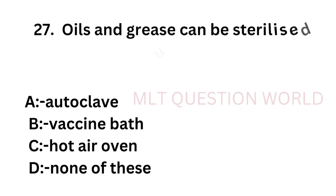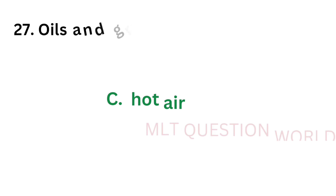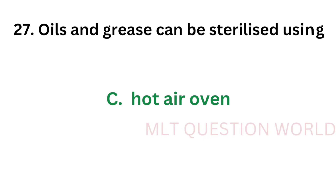Question number 27: Oil and grease can be sterilized using — option A: Autoclave, option B: Wax bath, option C: Hot air oven, option D: None of these. Which instrument can be used for sterilizing oil and grease? The correct answer is option C, hot air oven. Hot air oven is used for sterilization of oil and grease.